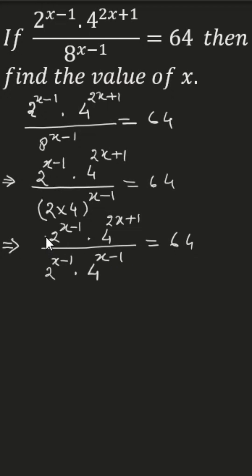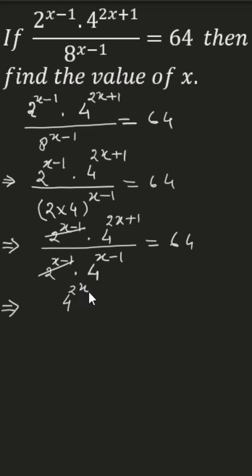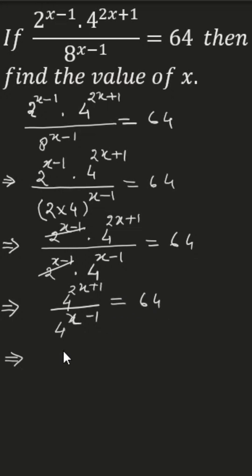The 2 to the power (x minus 1) terms cancel out, giving us 4 to the power (2x plus 1) divided by 4 to the power (x minus 1), equal to 64.